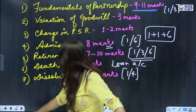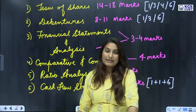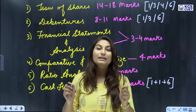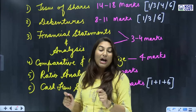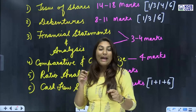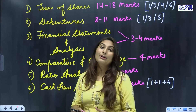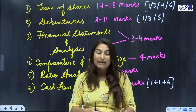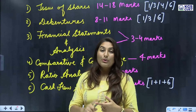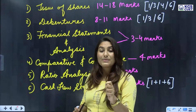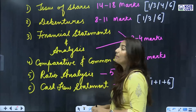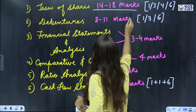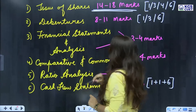Next, let's go to shares. Issue of Shares is the biggest chapter in accountancy. You can get many questions from journal entries and from pro-rata allotment, which is the most important topic. In issue of shares, you can get 14 to 18 marks.